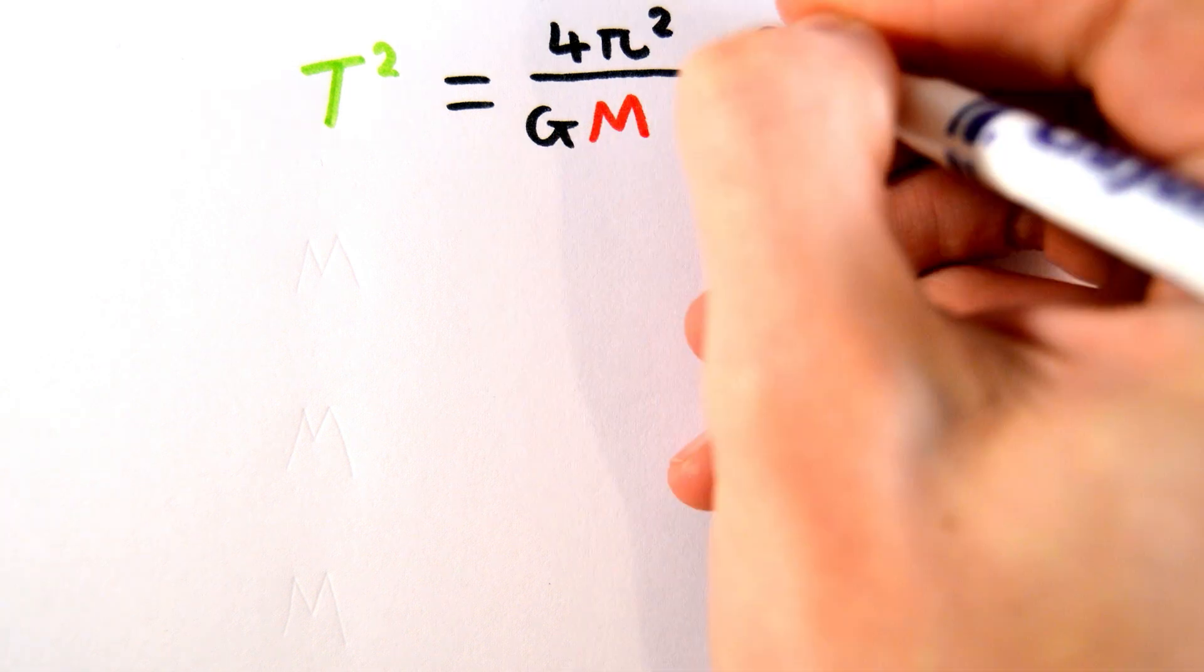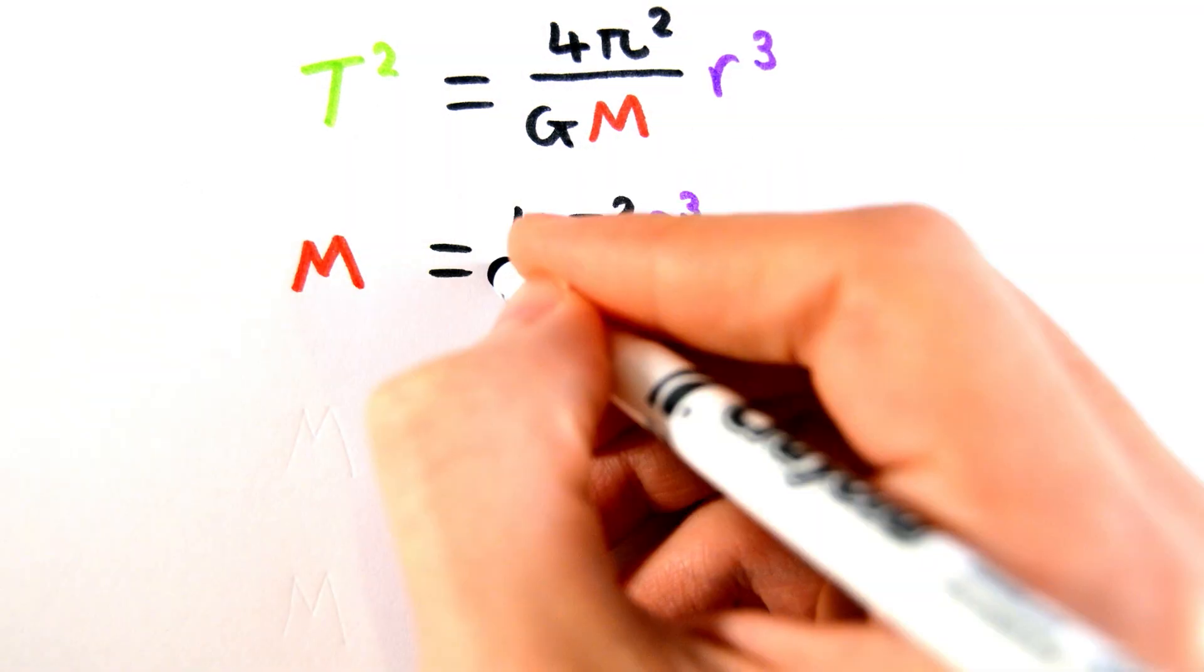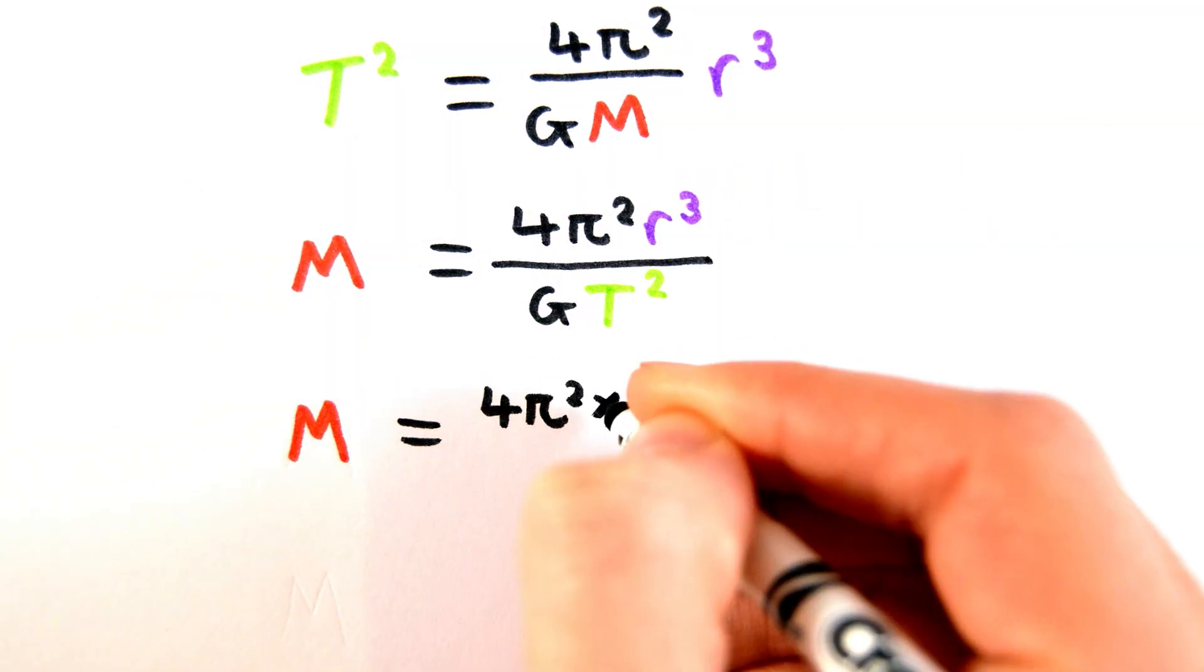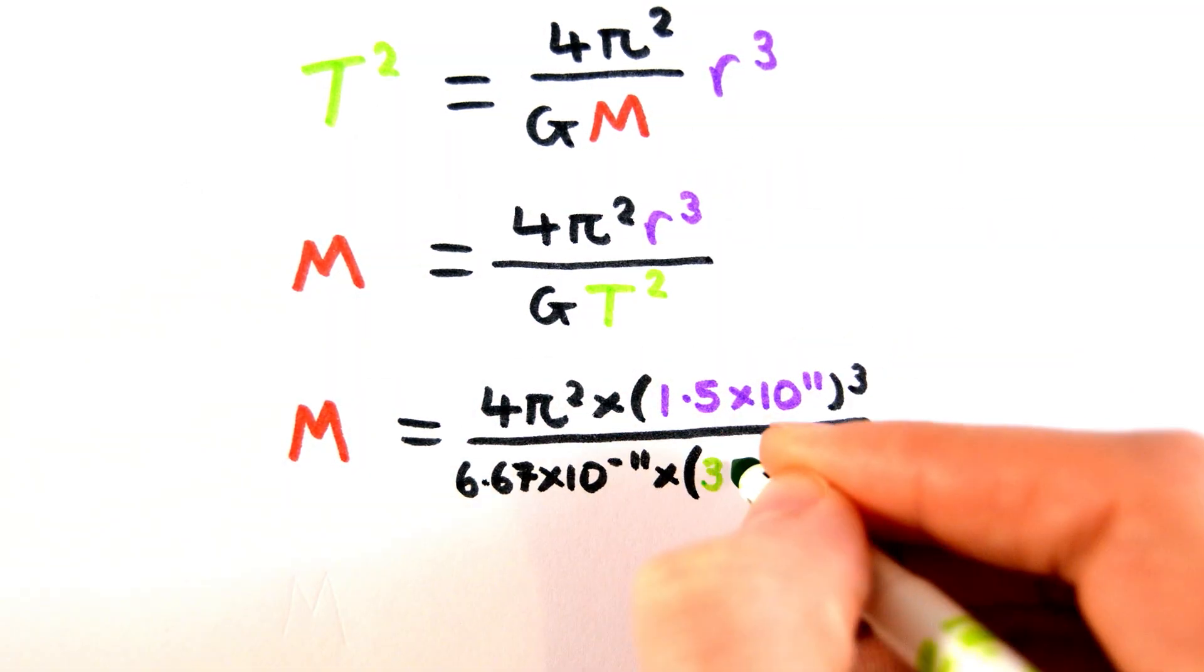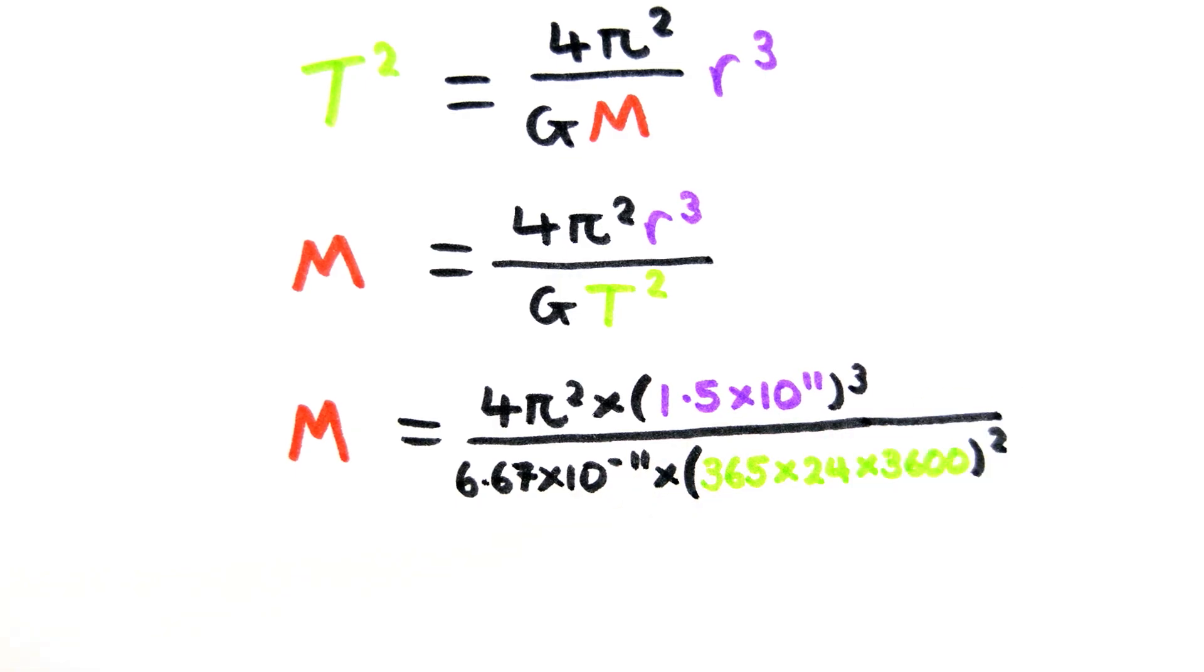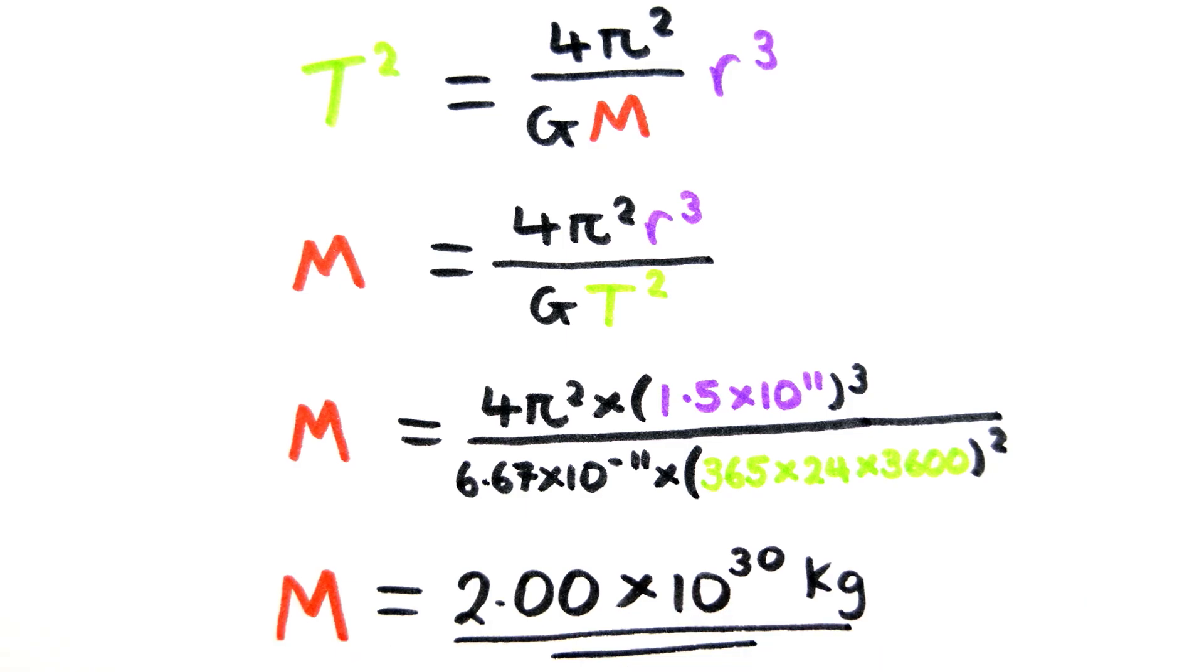For example, given that it takes 365 days for the Earth to orbit the sun, and that the distance of the Earth from the center of the sun is 1.5 times 10 to the 11 meters, we can work out the mass of the sun to be about 2 times 10 to the 30 kilograms.